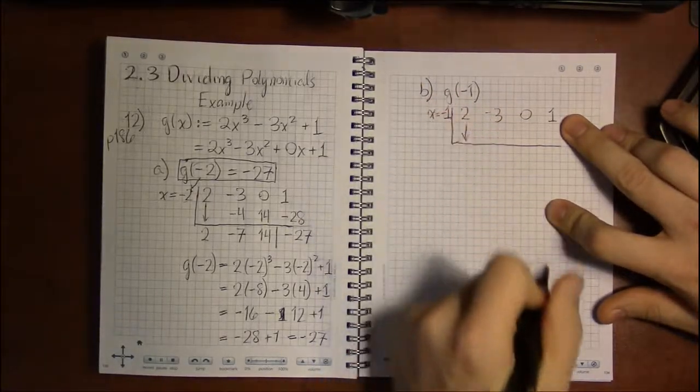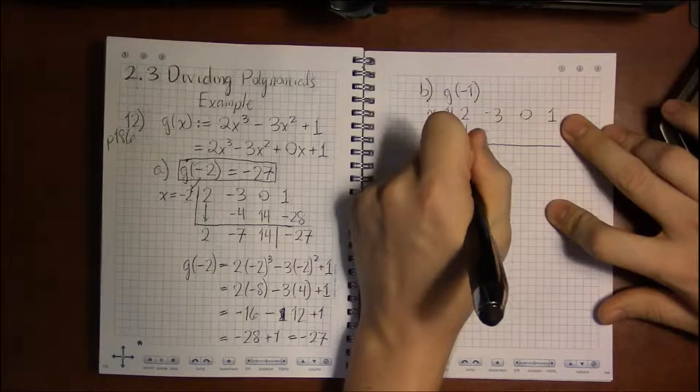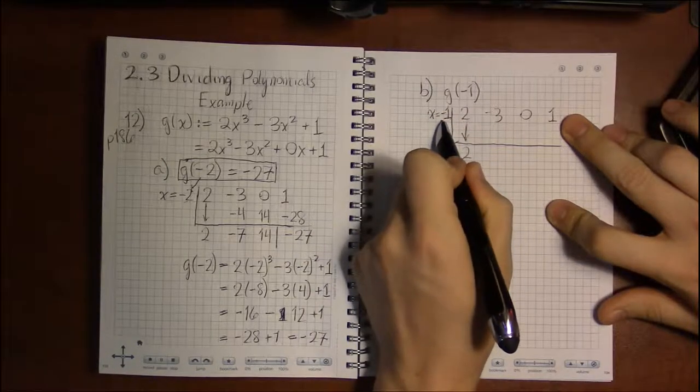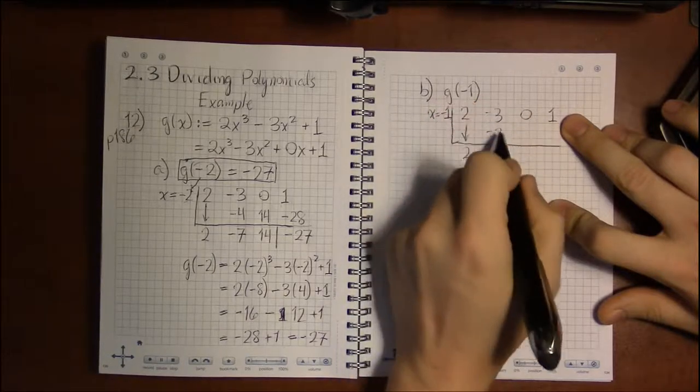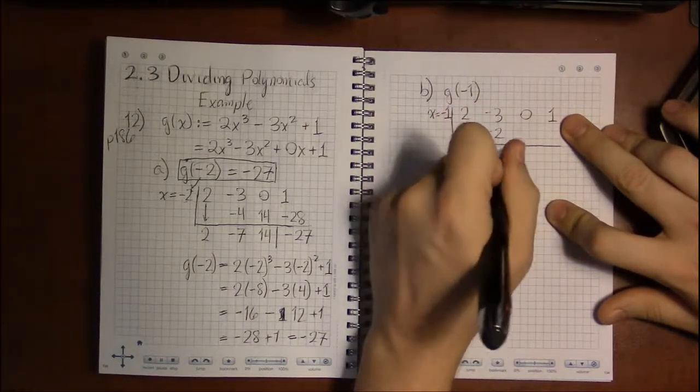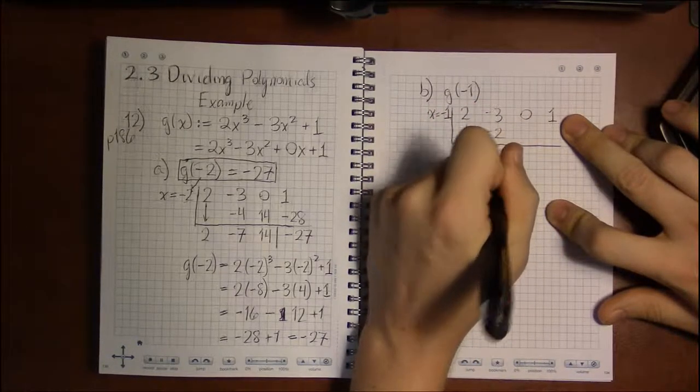So we drop the 2 down, the leading coefficient. Multiply the outside number minus 1 times 2, that's minus 2. Add minus 3 plus minus 2 is minus 5.